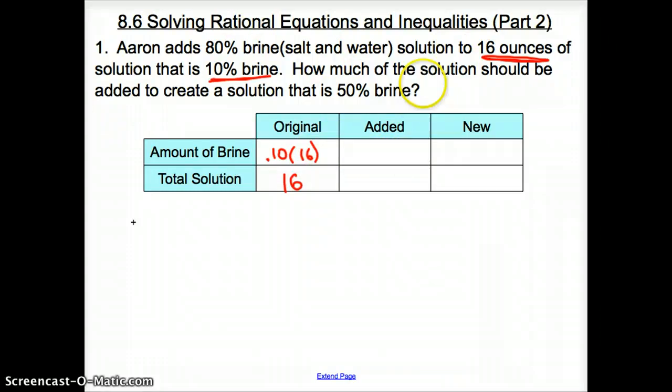No, we do not know how much is added, because we're looking to create a solution that is 50% brine. So I'm going to say that we do not know how much is added, but we do know that the solution added to it was 0.80. We're going to take that times x. My new solution is going to consist of this plus this. It's going to be 0.10 times 16 plus 0.8 times x. And then my new total solution, I have just 16 plus x.